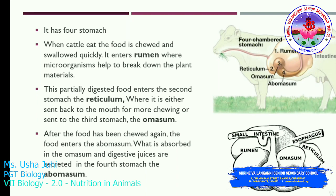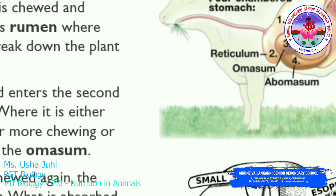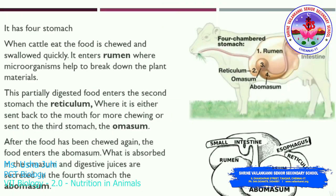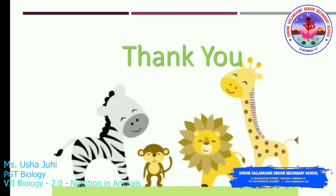Water is absorbed in the omasum and digestive juices are secreted in the fourth stomach, the abomasum. Looking at this picture: first the rumen, second the reticulum, third the omasum, fourth the abomasum. Thank you, students.